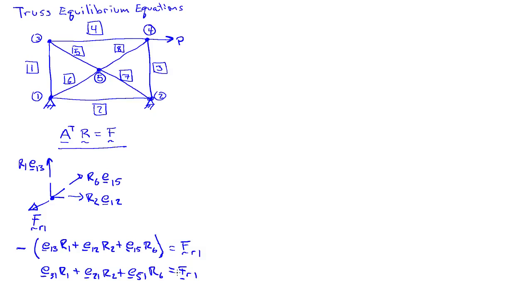That becomes our very first equilibrium equation. Now we can walk our way through the truss using this exact same pattern. Let's put all this in matrix form. We have five nodes, so we'll have five equations. The first equation is going to be E31, E21, then third bar doesn't play any role, fourth bar plays no role, fifth bar plays no role, sixth bar we have some interaction with E51, seventh bar does nothing, and the eighth bar also plays no role.